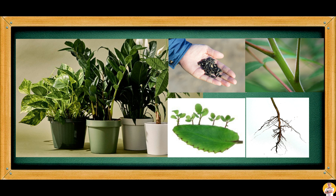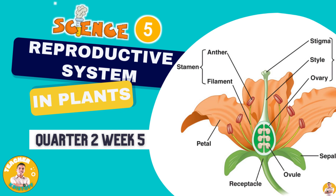This lesson is intended for you to describe the plant reproductive system responsible for the process, specifically sexual reproduction. This will lead you to understand how different parts of the plant function in producing their own kind.